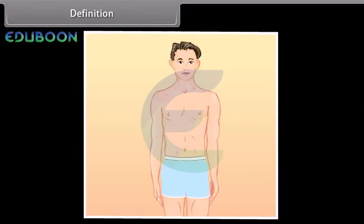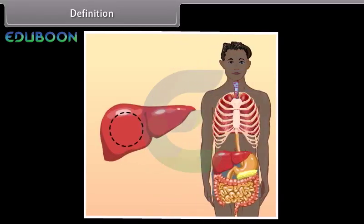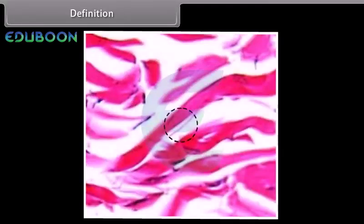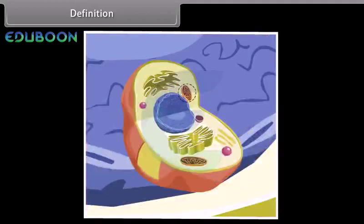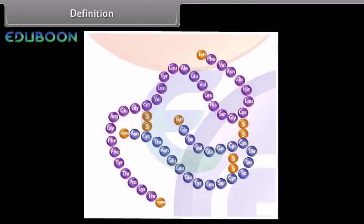Biomolecules are related to the living organisms in the sequence: living organism, organs, tissues, cells, organelles, and biomolecules.